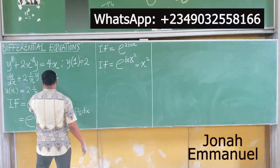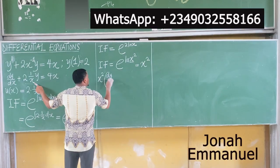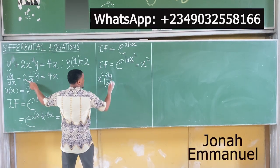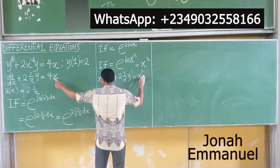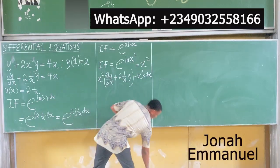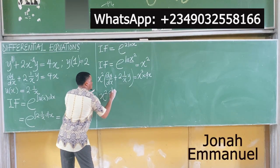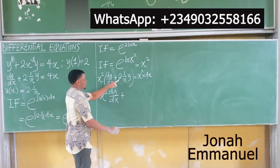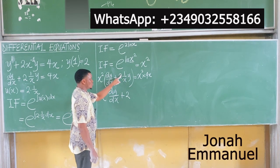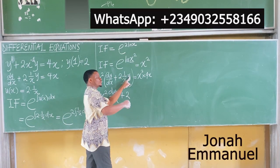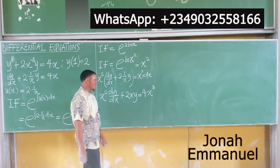The next task is to multiply the entire equation through by x². Multiplying everything: x²·dy/dx plus 2·(1/x)·y equals x²·4x. Expanding the left side: x² cancels one factor of x from 2·(1/x), leaving 2x, so the term becomes 2xy. The right side gives 4x³.